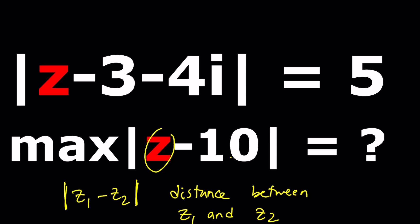So the first expression means the distance between Z and — be careful here because you have to put the 3 plus 4i in parentheses, so you're negating a sum. This means the distance between Z and 3 plus 4i, and you want that distance to equal a constant. That means you want the set of points Z that are all the same distance from the fixed point 3 comma 4 — and that's a circle.